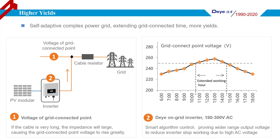Doye inverters use an advanced algorithm with a wide range of AC output voltage, keeping the system self-adaptive to complex power grids and extending grid connection time. As the picture shows, from 10:30 to 14:30 when the grid voltage is very high, the inverter is still able to connect to the grid and generate more energy.